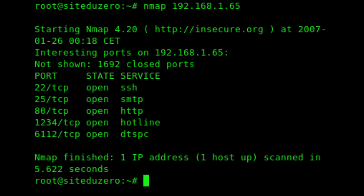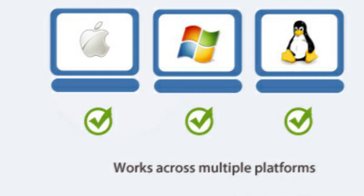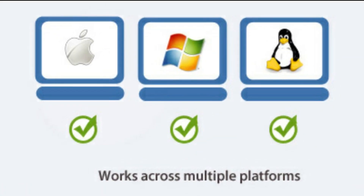The uses of Nmap include determining what hosts are available on the network, what services those hosts are offering, what operating systems they are running, and what type of firewalls are in use. Nmap is platform-independent — it works on all platforms including Windows, Mac OS, and Linux.